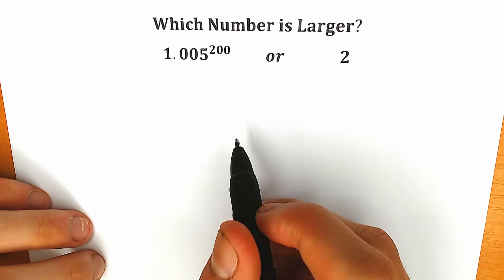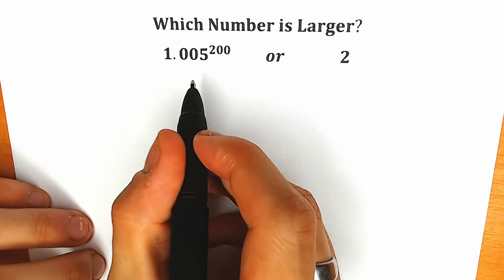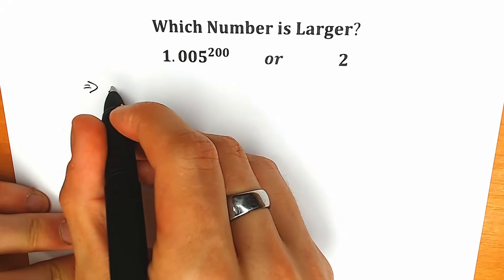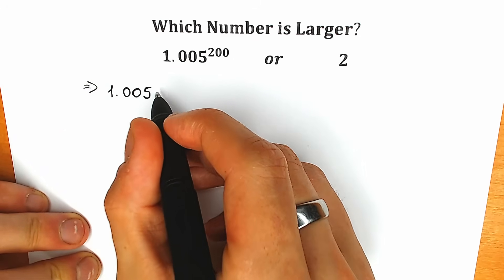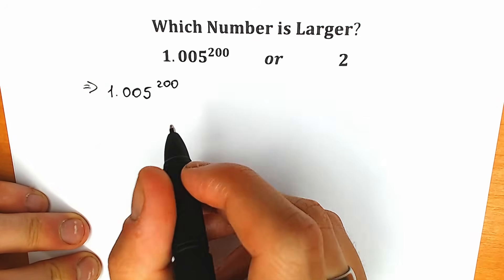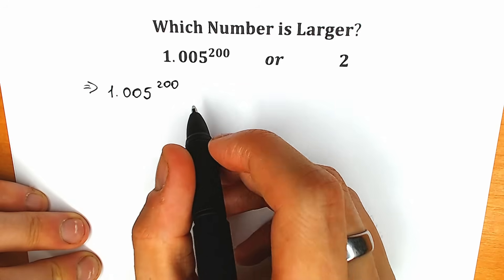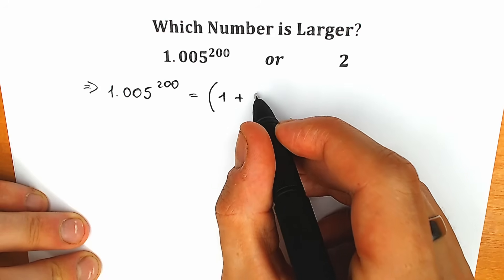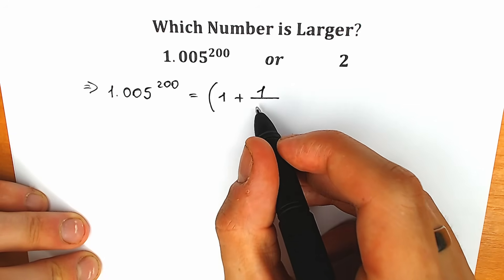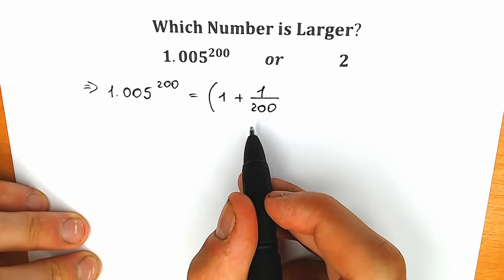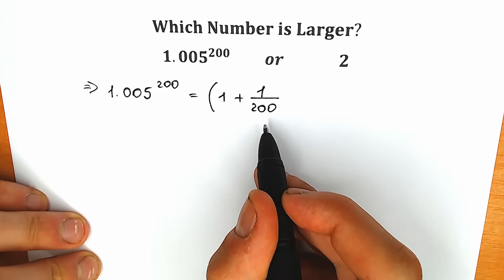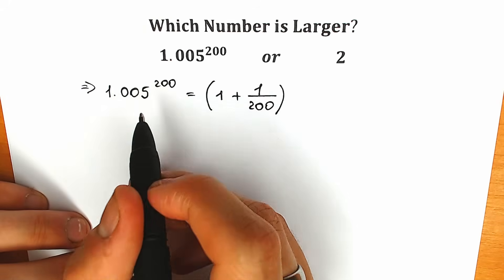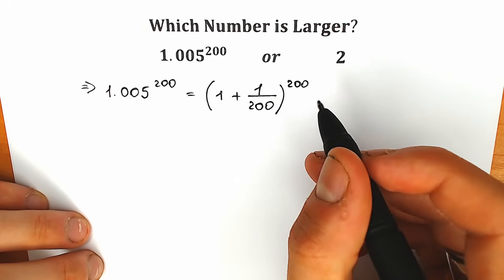Right now let's try to solve it. First of all, instead of this expression on the left side, let's rewrite it in a different way. So we have 1.005 to the power 200. This 1.005 we can write as 1 plus 1 over 200, because 1 over 200 equals 0.005. So we have absolutely the same expression, and of course we need to raise this to the power 200.